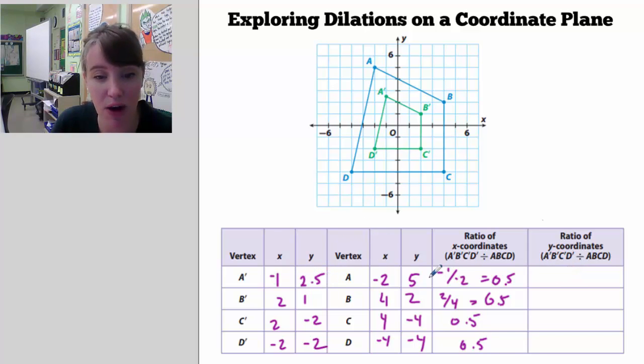So I'm just focusing on the y coordinates in this column. So it's 0.5. 1 over 2 gets you 0.5. Negative 2 over negative 4 gets you 0.5. And negative 2 over negative 4 gets you 0.5. So here, all of the coordinates between the image and the pre-image have a ratio of one half or 0.5.